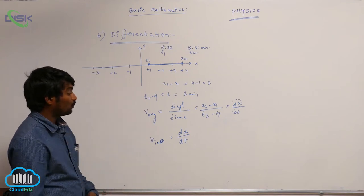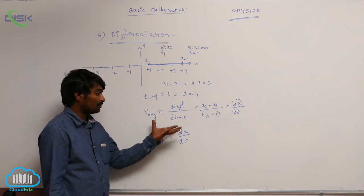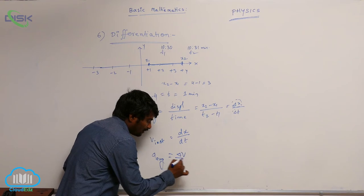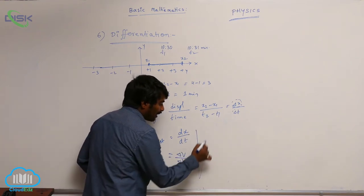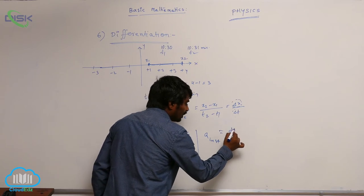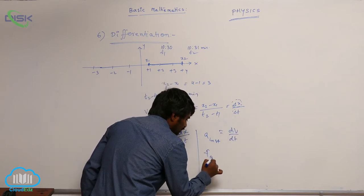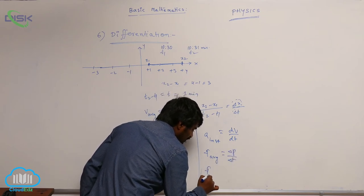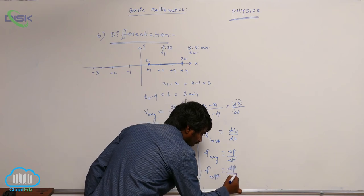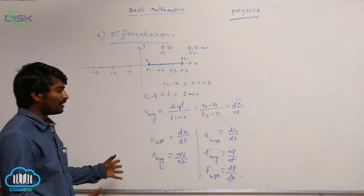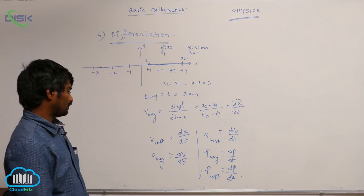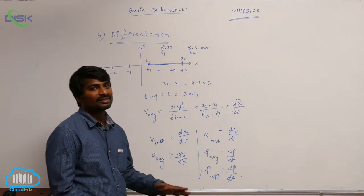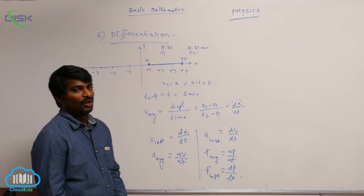With the help of differentiation, we define many physical quantities: average acceleration equals delta v by delta t, instantaneous acceleration equals dv/dt, average force equals delta p by delta t, and instantaneous force equals dp/dt. To deal with these types of formulas and concepts, we must have knowledge of differentiation.